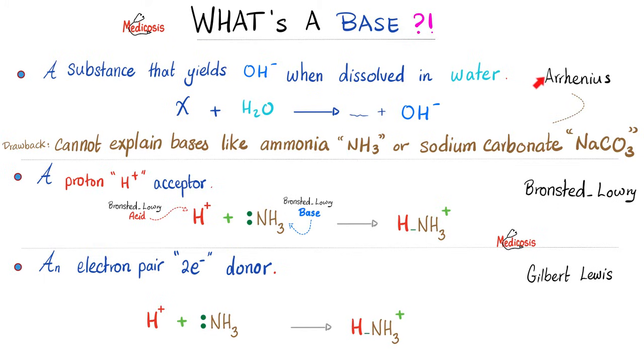So Arrhenius, you are a doofus. You could not explain ammonia. But look at Bronsted and Lowry. A base is a proton acceptor. Look at this lovely ammonia. It can accept this proton. So it's a base. Or look at Lewis. A Lewis base is an electron pair donor. Look at this pair of electrons. I will donate them to H. And I will make a bond like this. Do you remember your organic chemistry and the electrophile versus nucleophile? Same concept. Stay tuned for my upcoming organic chemistry playlist.